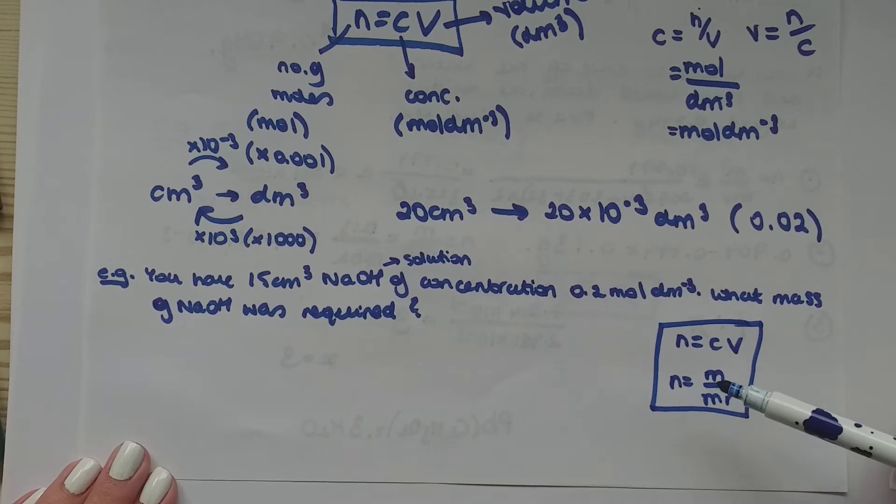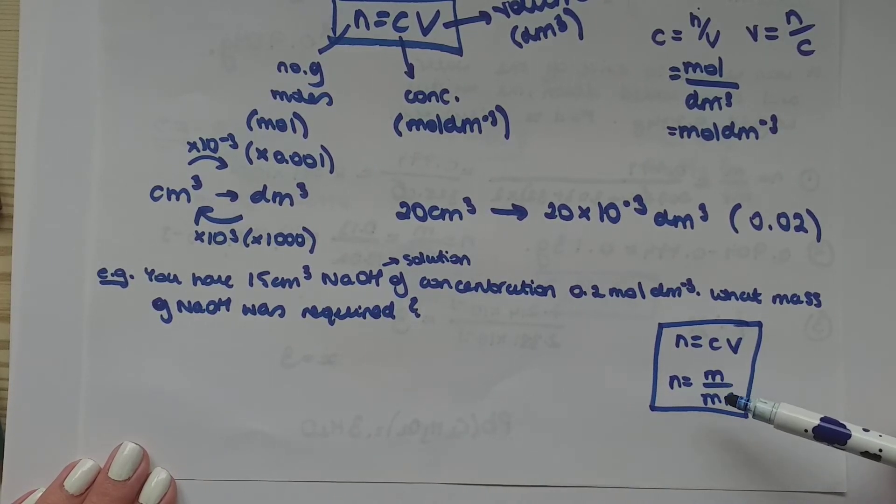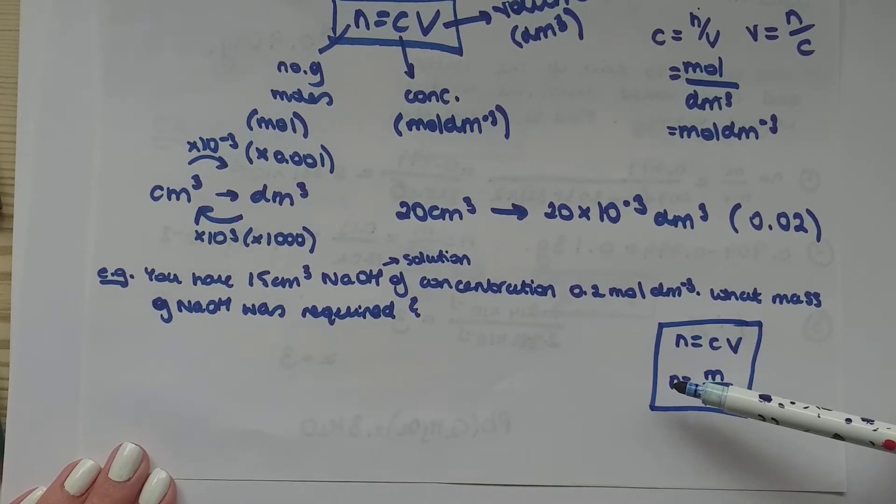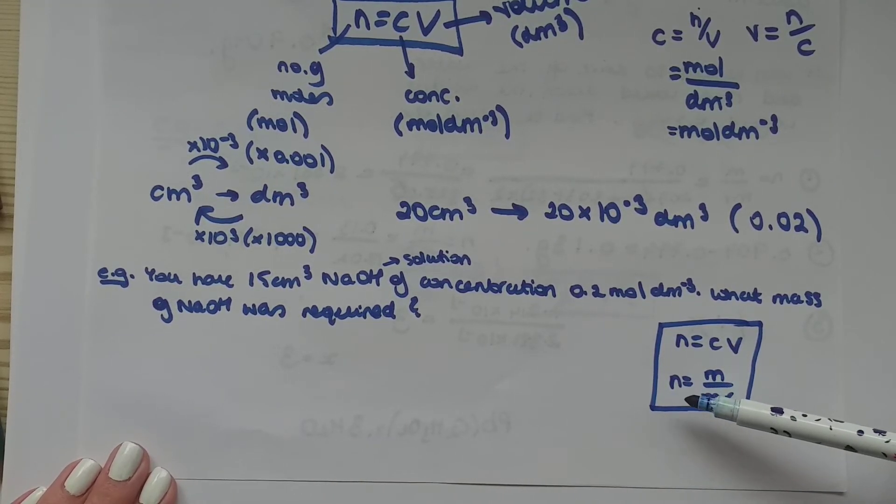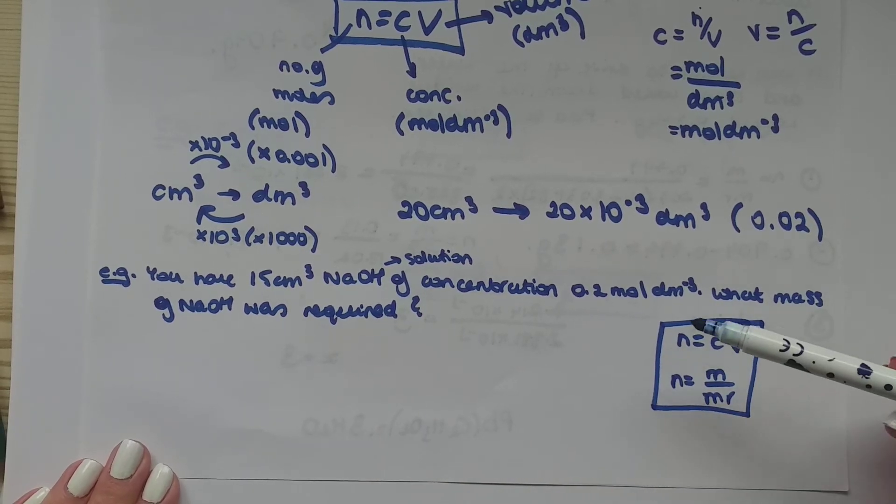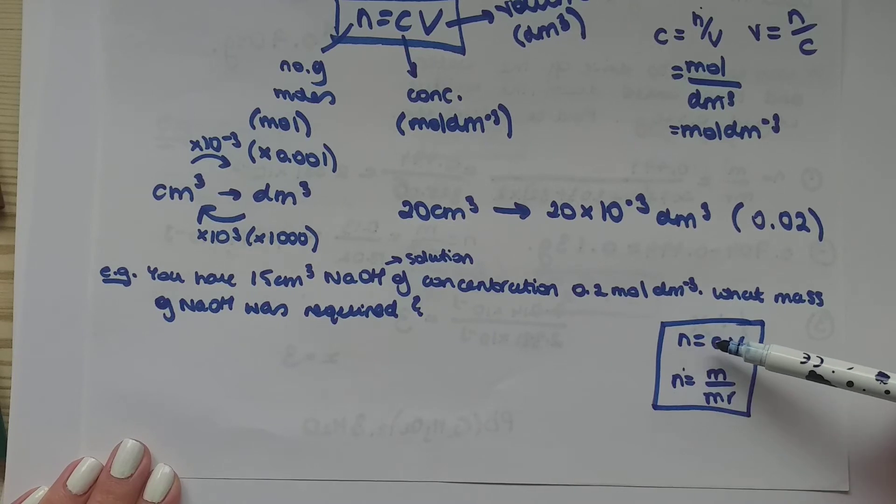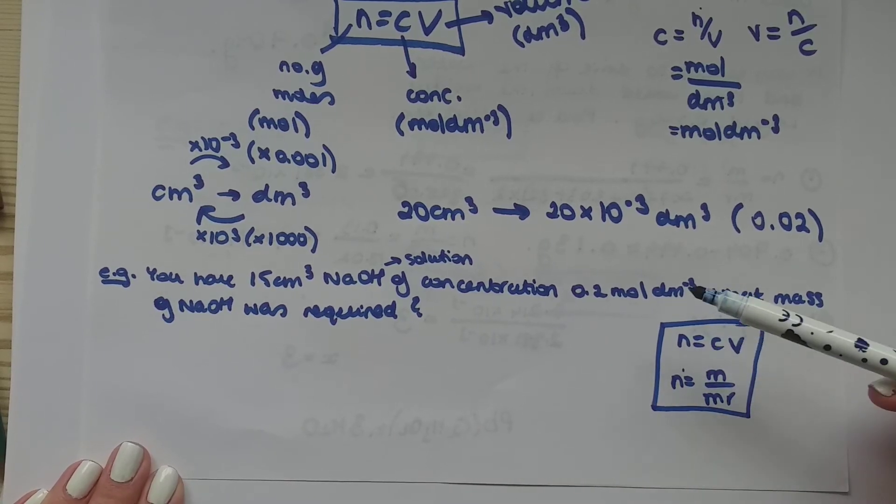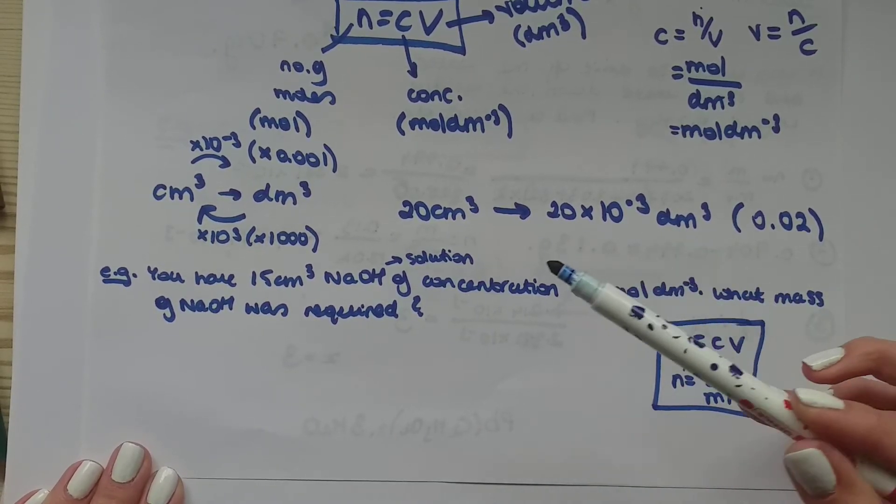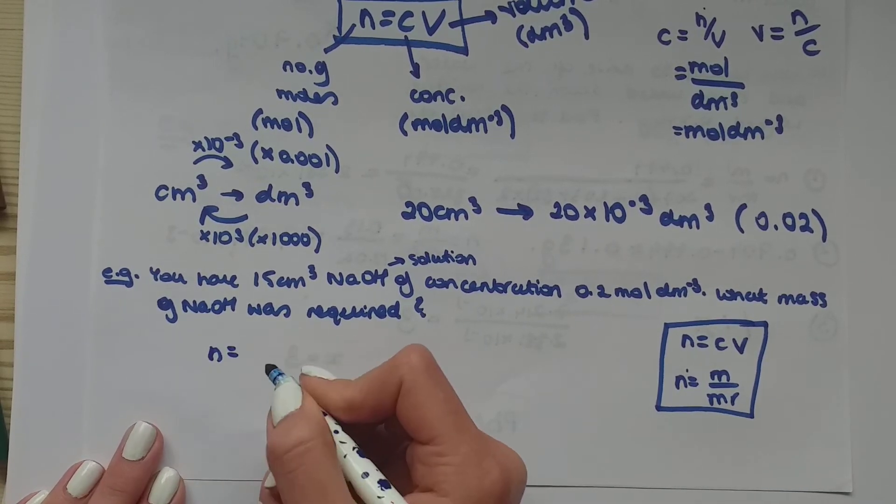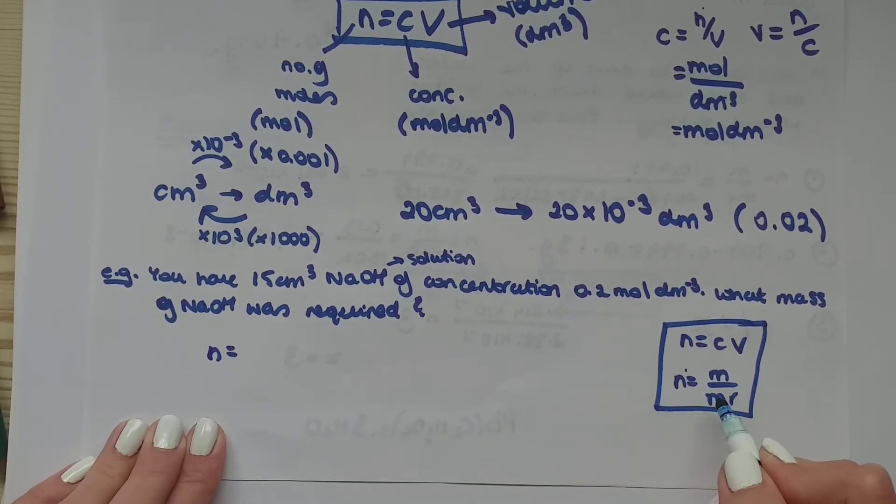First of all, you're trying to find mass, but in order to find mass, we also need the mr. We can work out the mr of NaOH. However, you don't have little n, which is the number of moles. Look, here, you're trying to find the number of moles. So do we have concentration? Yes, we do. Do we have a volume? Yes, we do. So you can work out the number of moles, which then can be used in here.